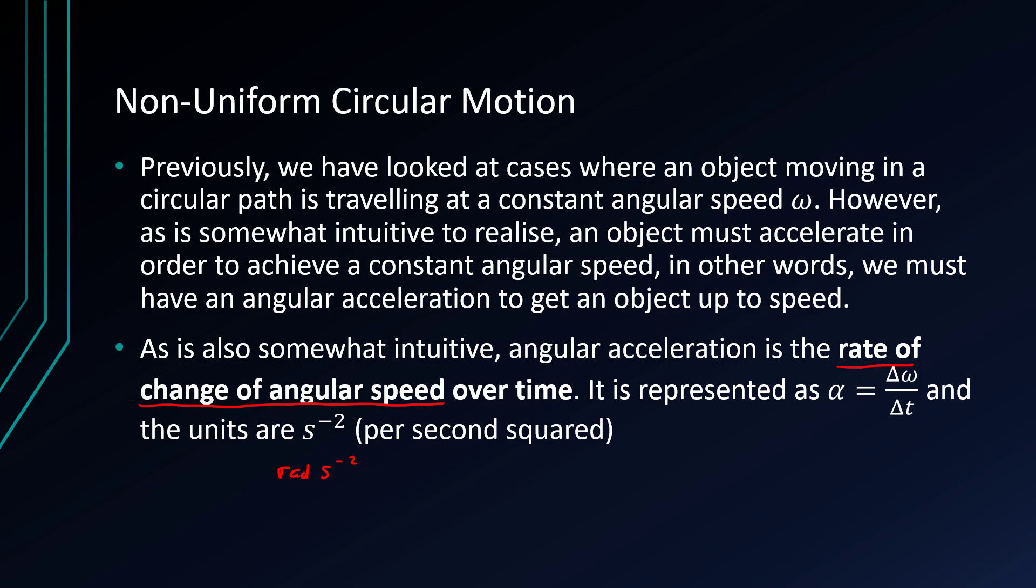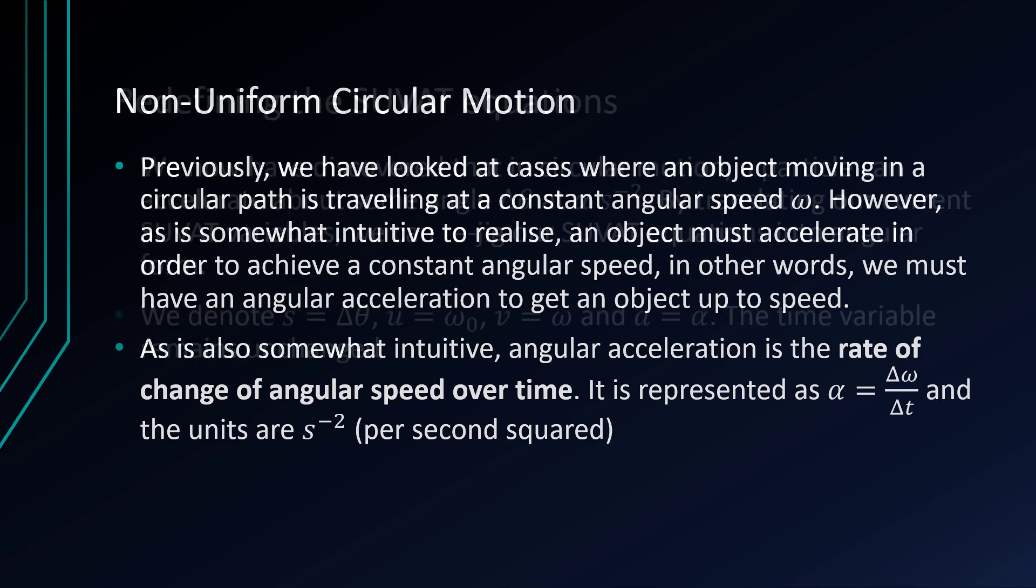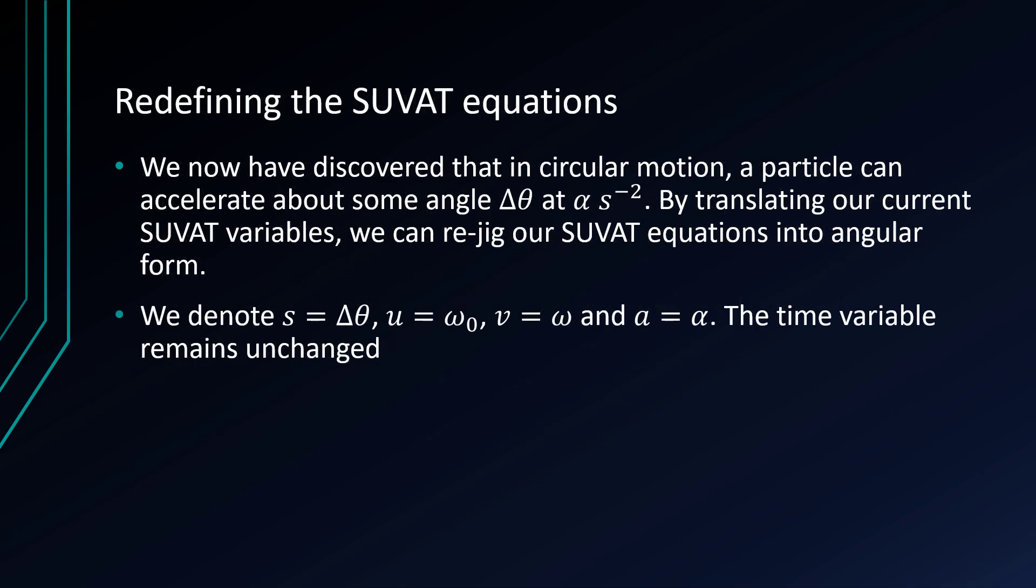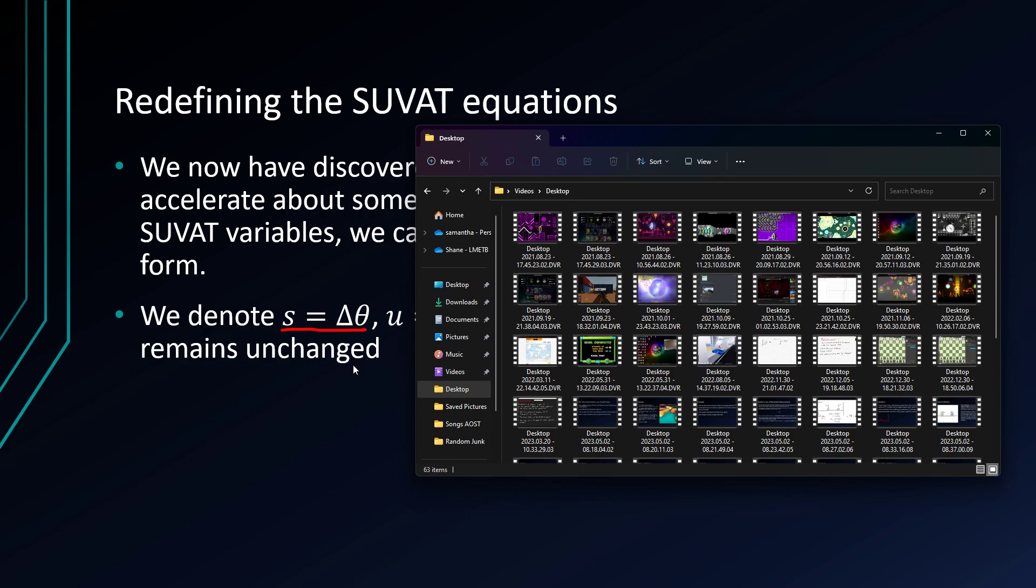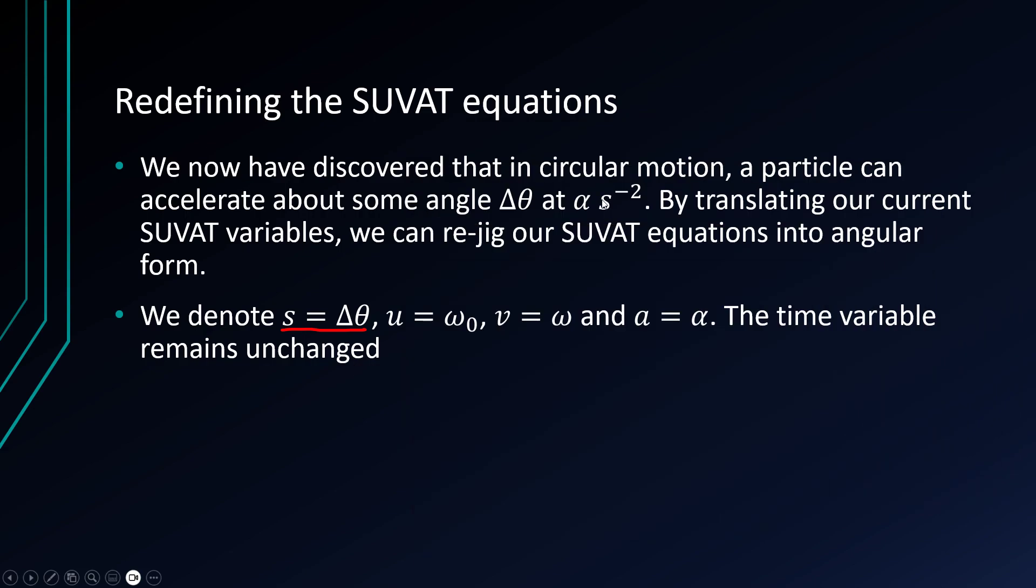Now because we have acceleration, we can actually redefine the linear motion equations, but in angular form. So the translations we have to make are the displacement undergone is the angle changed. So the change in angle, because we're dealing with radians, there's no meters anywhere.